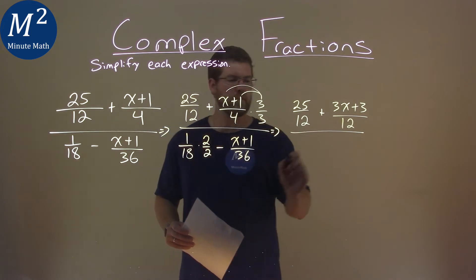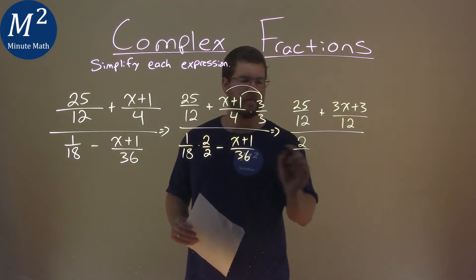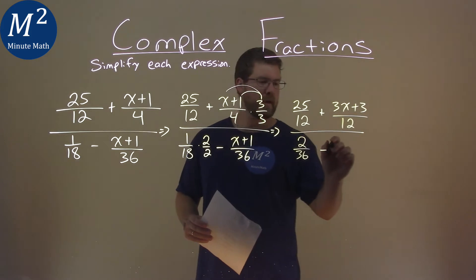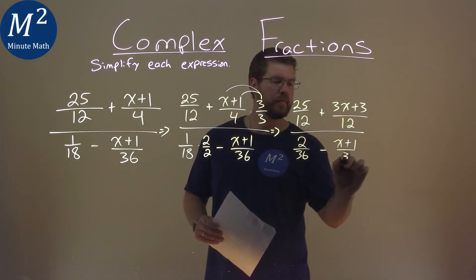And then 4 times 3 is 12. Down here, same idea, 2 times 2 is 2, 18 times 2 is 36, minus that x plus 1 over 36.